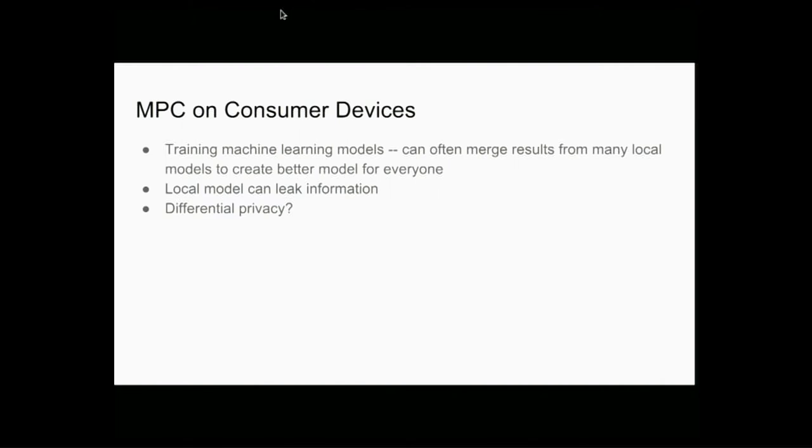So I guess some people would immediately say, aha, differential privacy. And differential privacy is relevant here. But, as it turns out, the amount of noise we have to add to achieve differential privacy with no other mechanism is going to be quite high. So we're going to make it much lower when we use MPC. And that is our goal.